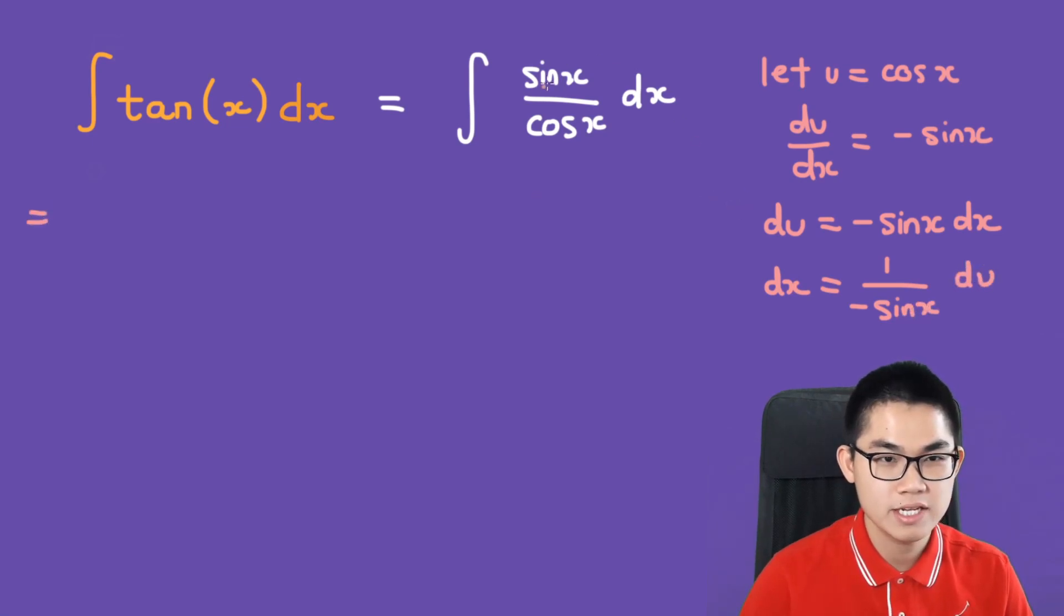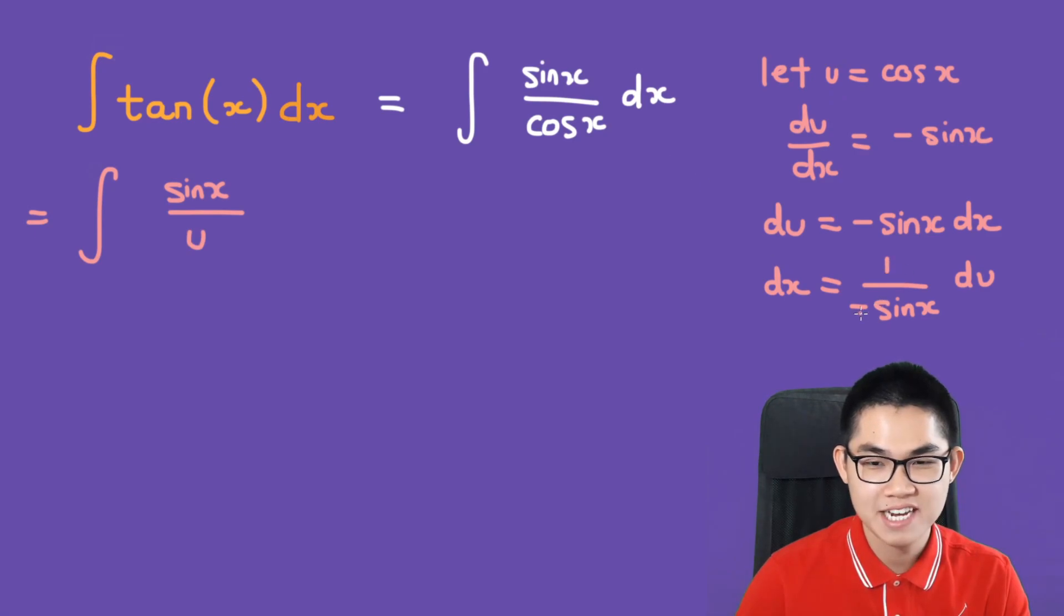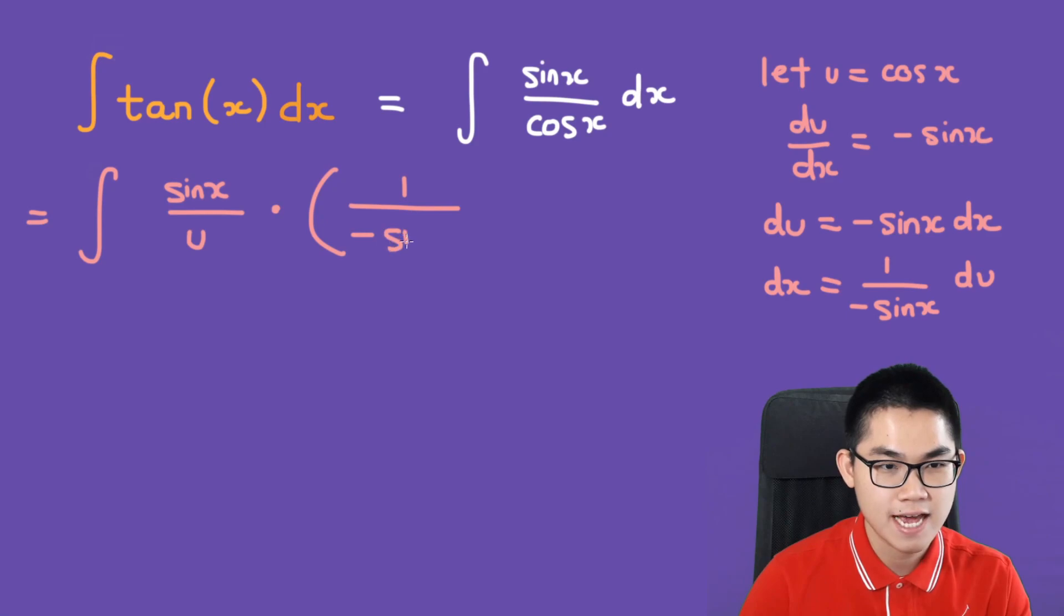We're going to plug it into the integral. So we have sine of x over cosine of x, which is u. And then dx is 1 over negative sine of x du. So times 1 over negative sine of x du. And as you can see, the sine of x will cancel out.